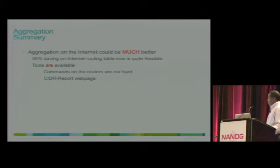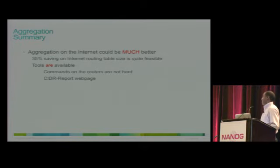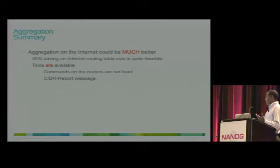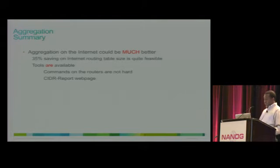In summary, the aggregation could be much better. It's possible to get that 5% saving if the recommendations are implemented. A lot of people are implementing them, but some are not. The summary report pushes people to be more conforming rather than violating some of those rules.